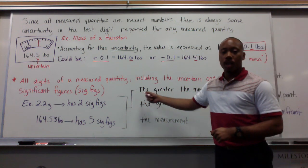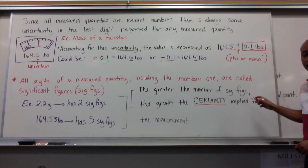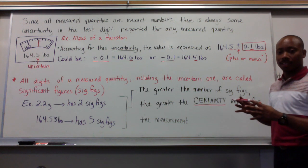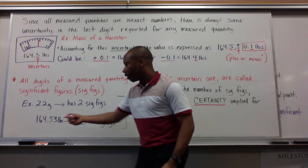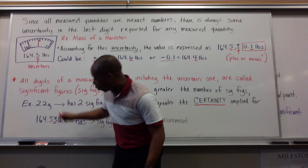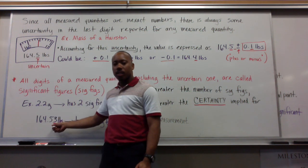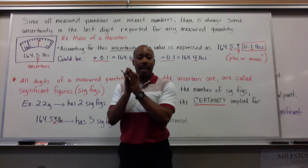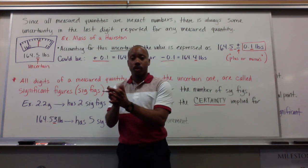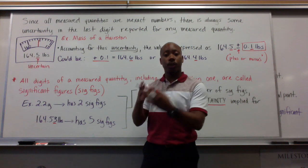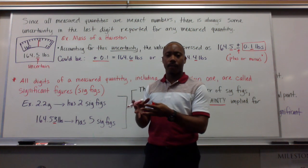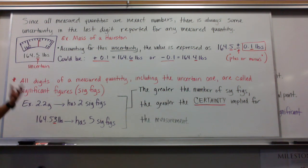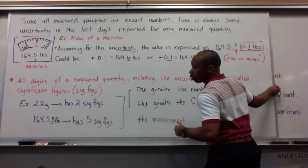Here's a special note: the greater the number of significant figures, the greater the certainty implied for the measurement. So the more significant figures we have, the greater the certainty — we're certain out until that last value, that's the precision and accuracy of that number. Now, determining the number of significant figures isn't always this simple. There are some rules that govern how we do that, so let's take a look at these rules.